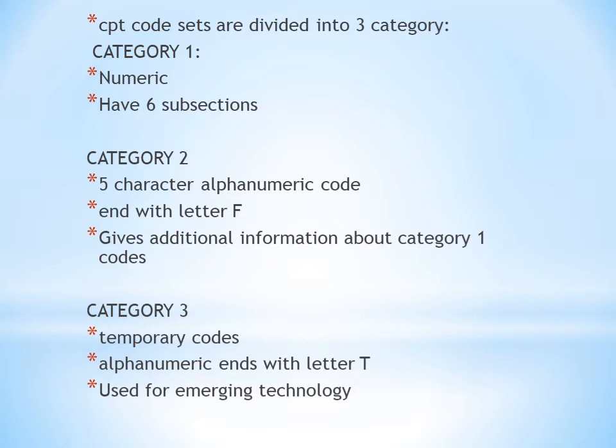Category II codes are five-character alphanumeric codes, meaning they contain alphabet and numbers. Specifically, they include four numbers and the fifth character is an alphabet — they end with the letter F. Category II codes provide additional information about Category I codes.